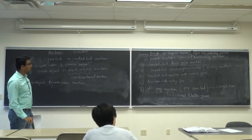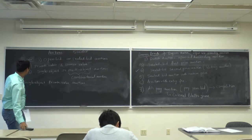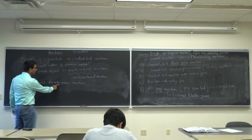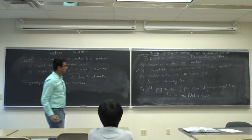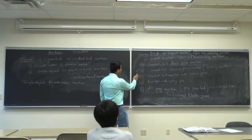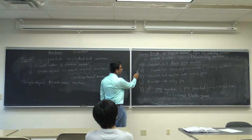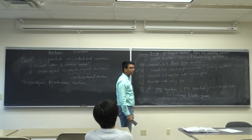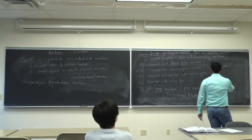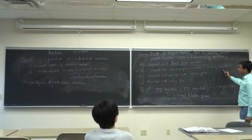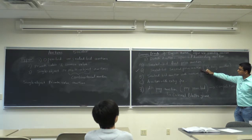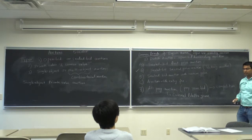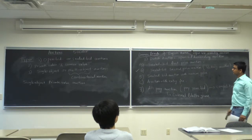Those are the common formats for single object private value auctions. Out of these, we have studied the sealed bid second price auction using the VCG mechanism — we used VCG to prove that being truthful is the best strategy. It is a weakly dominant strategy.